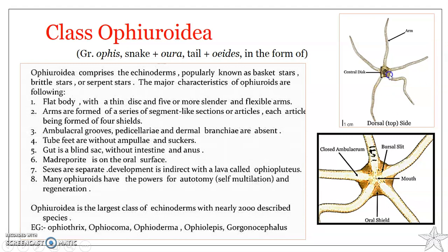Ophiuroids resemble asteroids in that their body consists of a central disc, as you can see here, with arms emerging from the disc. Their arms are long, slender, and more sharply set off from the disc, unlike the asteroids where the arms gradually emerge from the central disc. Here you can see it is a sharp set off from the disc.